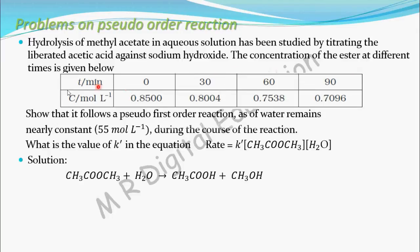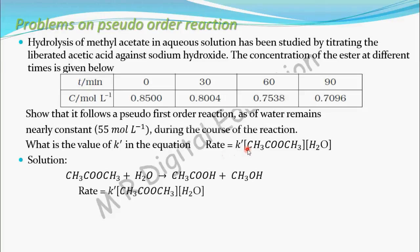We have to show this is a pseudo first order reaction. Water remains constant at 55 mole per liter, and we have to calculate the value of k dash. The given rate equation is: rate = k dash × [CH₃COOCH₃] × [H₂O]. Since the concentration of H₂O is constant, we can take k dash and [H₂O] together as one new constant k, where k = k dash × [H₂O].